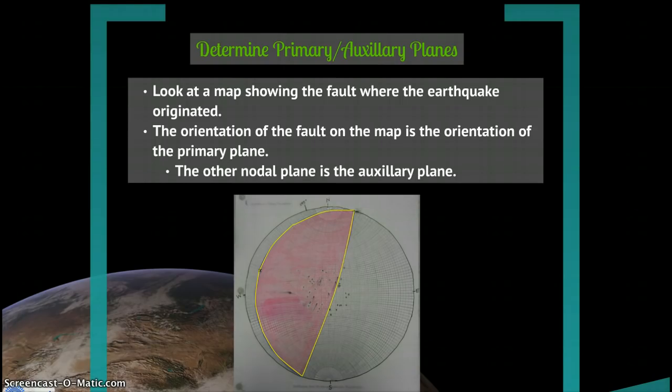The orientation of the fault on the map is the orientation of the primary plane. So for example, if the fault runs northeast-southwest on the map, it will run northeast-southwest on your plot. And mine is actually an example of that.